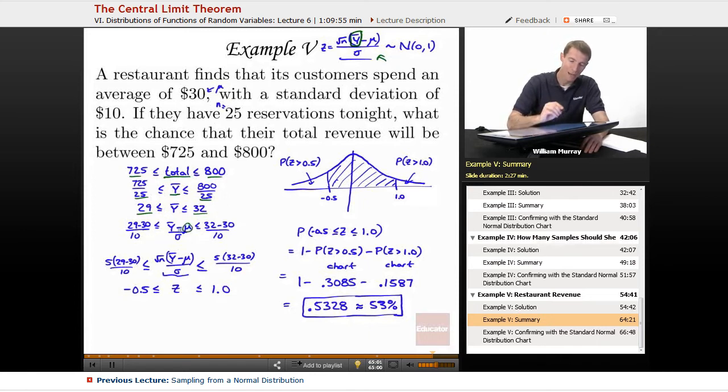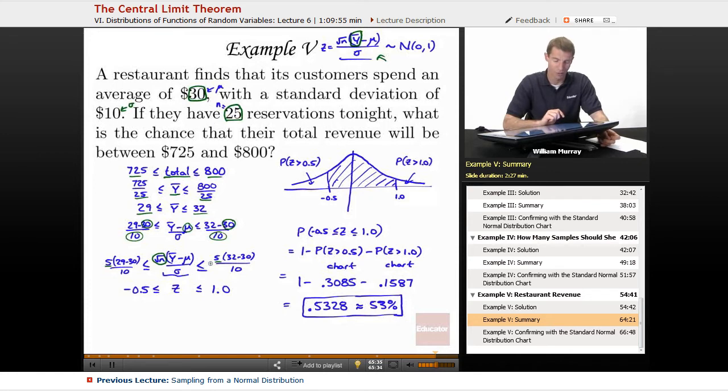And then I started to build up this formula for a standard normal variable. So I subtracted mu from both sides, that was the average that all the customers in the world spend at this restaurant. So I subtracted 30 from both sides. And then I divided by sigma, the standard deviation. And then I multiplied by the square root of n on the next line. n is the number of customers. There's 25 of them. So I'm going to multiply both sides by 5, because 5 is the square root of 25. They simplified down to negative 0.5 and positive 1.0.